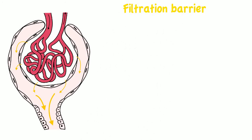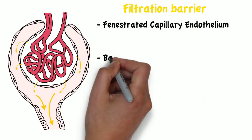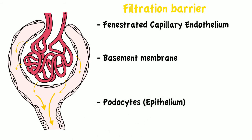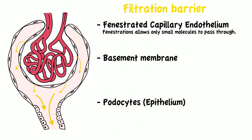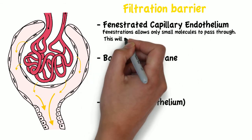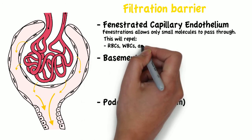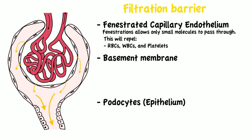The filtration barrier is made up of three components: the fenestrated capillary endothelium, the basement membrane, and the podocytes, which are referred to as the epithelium. The fenestrated capillary endothelium has openings or fenestrations that allow only small molecules to pass through. This will repel red blood cells, white blood cells, and platelets, preventing them from being excreted in urine.